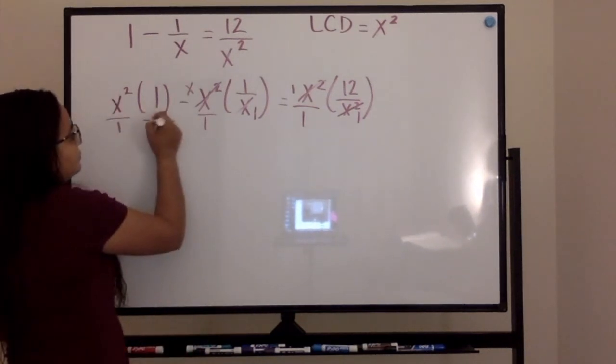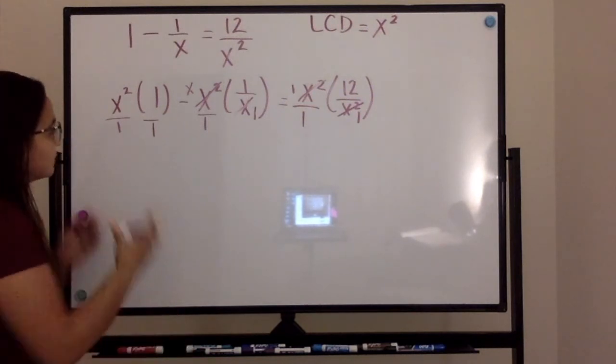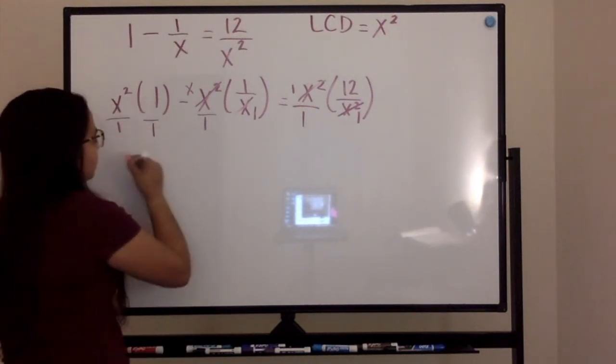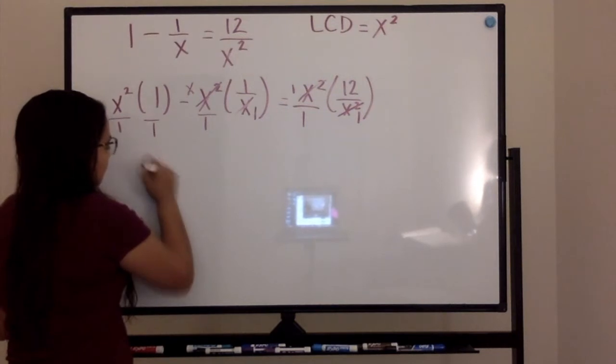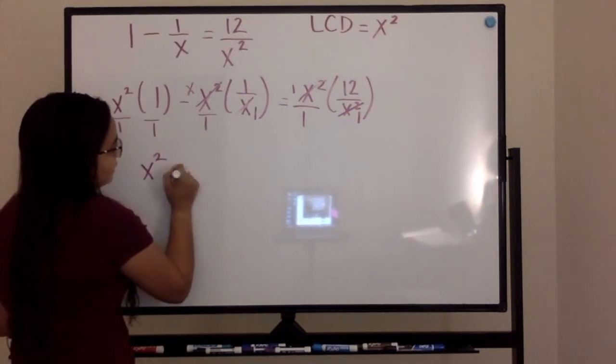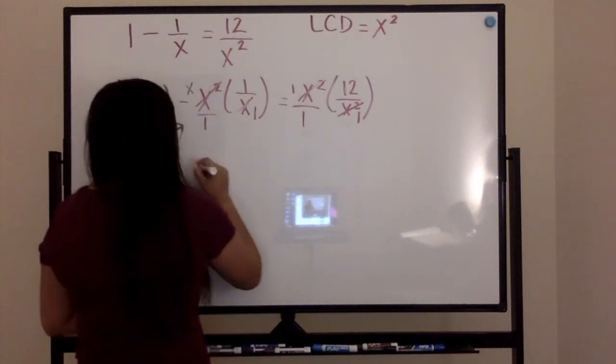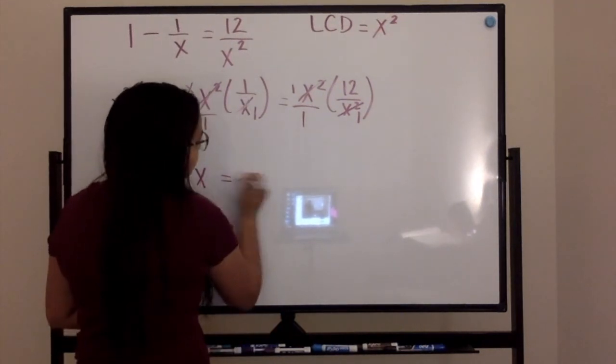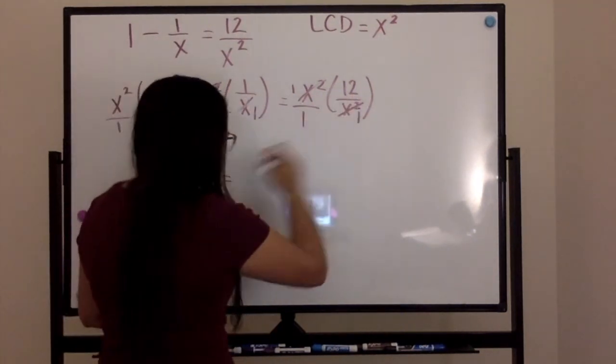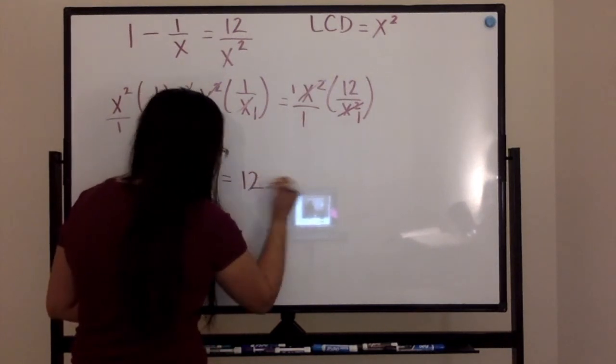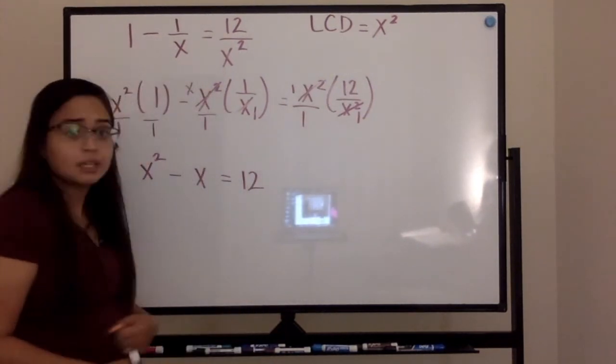So this is what we're left with. Let's see how it would look. x squared times one is x squared minus x times one is x. Now one times twelve over one is twelve. That's what we're left with.